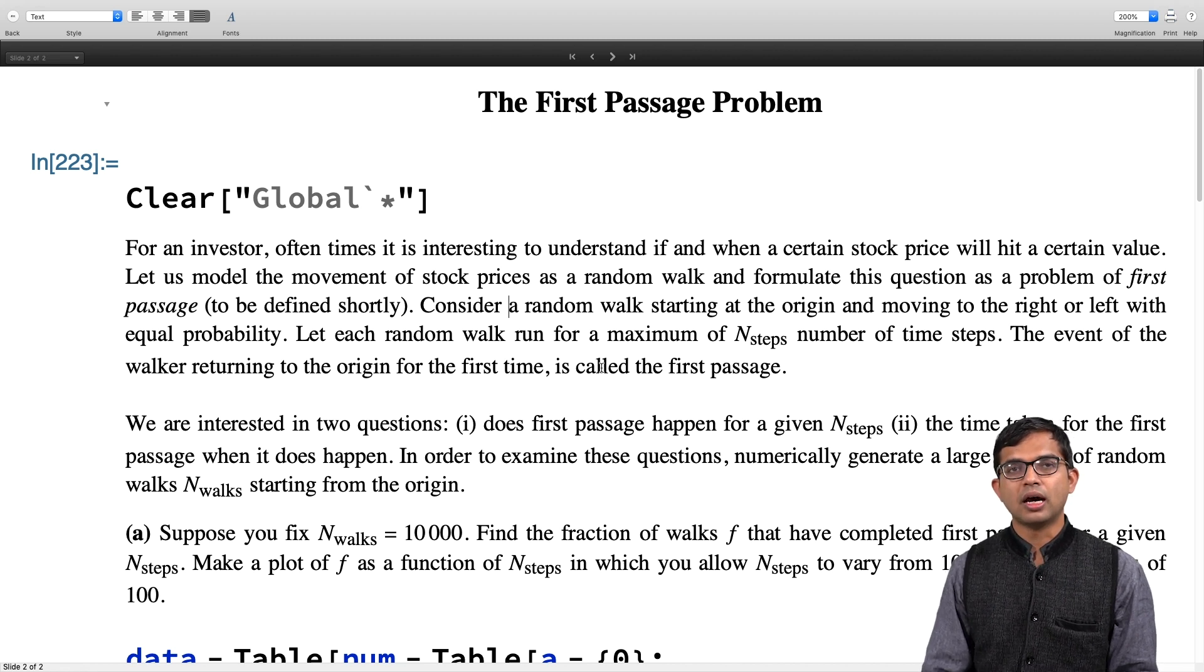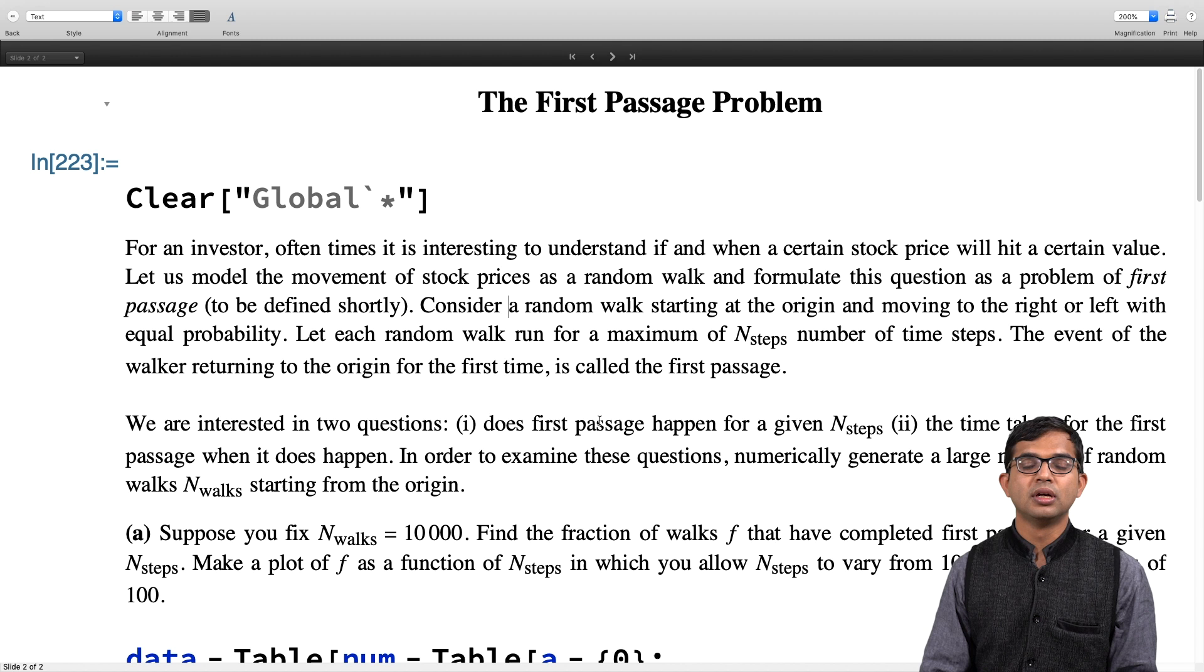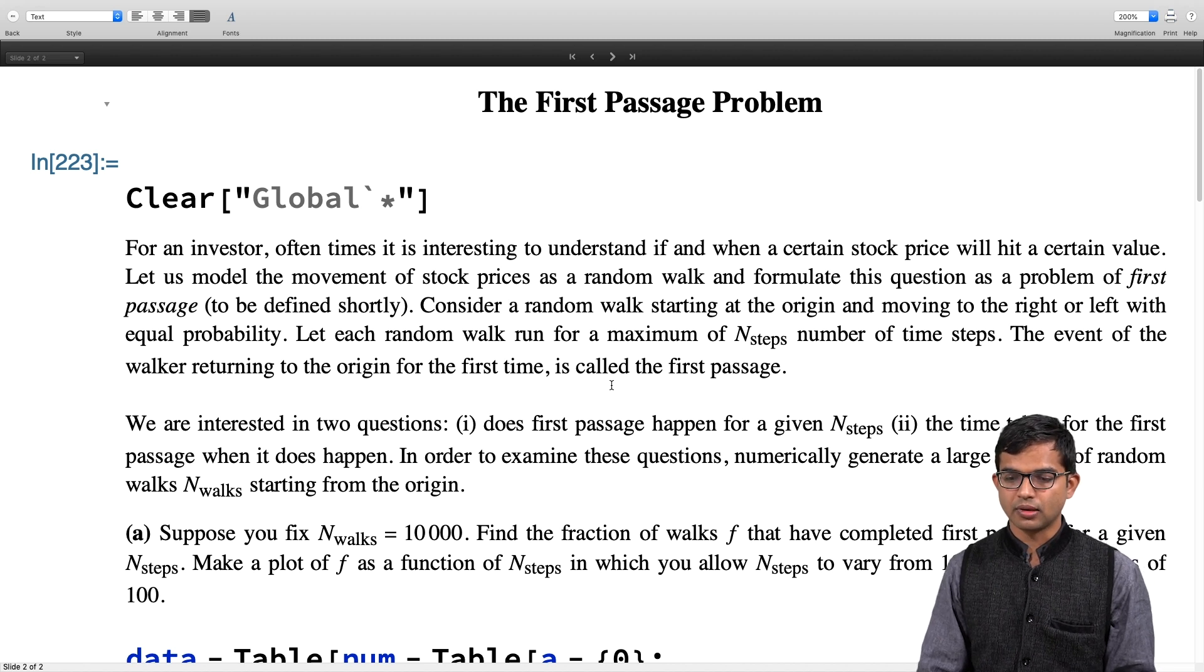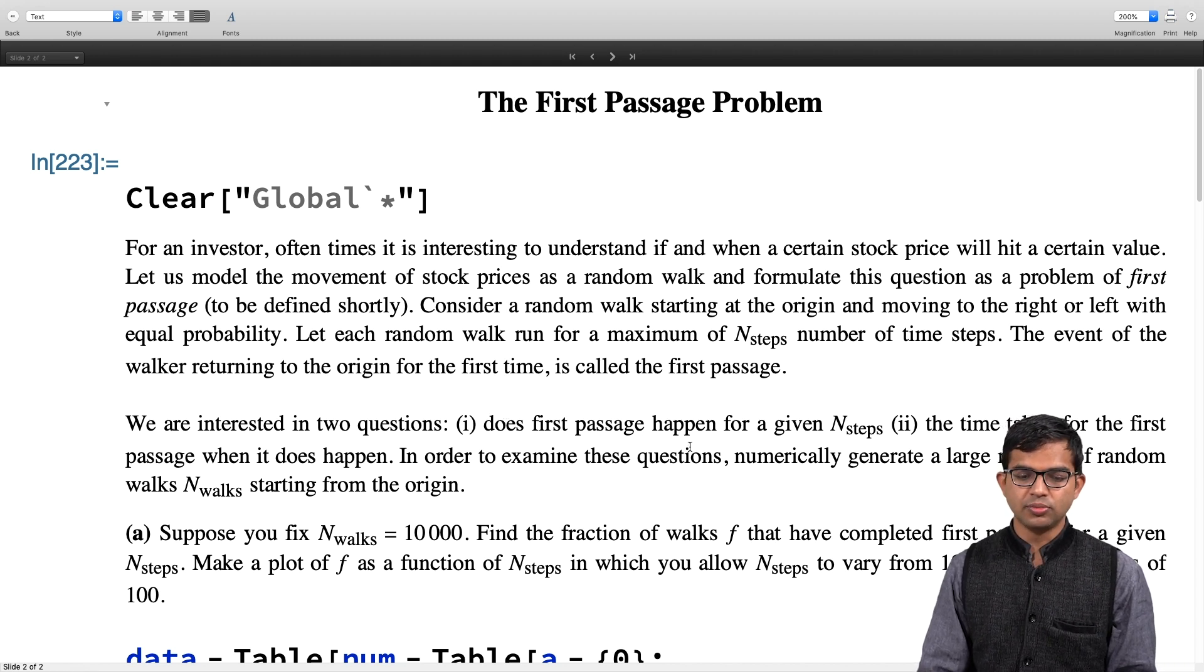We will model this as a pure unbiased random walk. In reality, it is not really the correct model for the stock market, it is way more complicated. But let us understand this question for the 1D random walk problem. Let us numerically just generate a large number of walks and keep track of it and work out the solution.